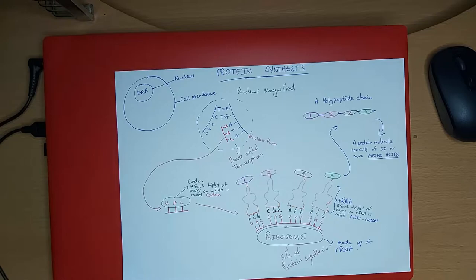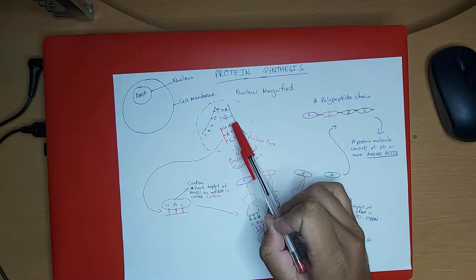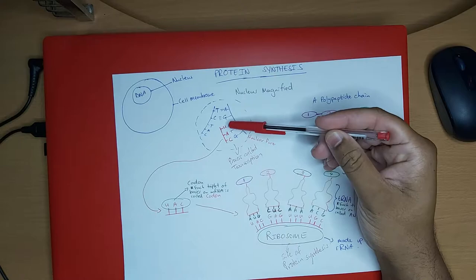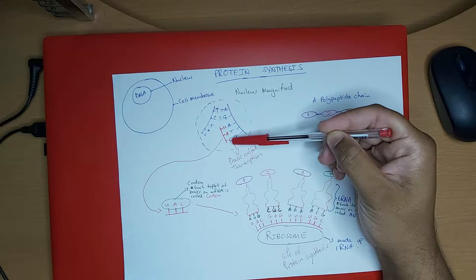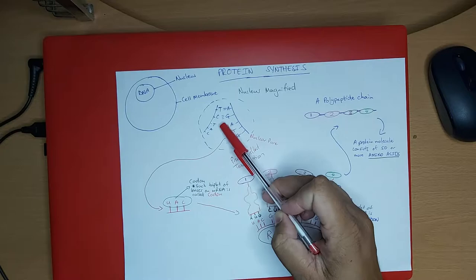The second step is the mRNA molecule is built. Free nucleotide bases come into the nucleus and they attach to the exposed DNA nucleotide bases. So we have ATG which are exposed, and we can see that uracil comes in and attaches to adenine, adenine comes in and attaches to thymine, and cytosine comes in and attaches to guanine — forming an mRNA molecule.